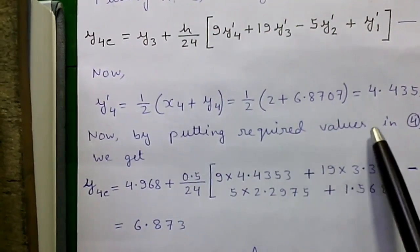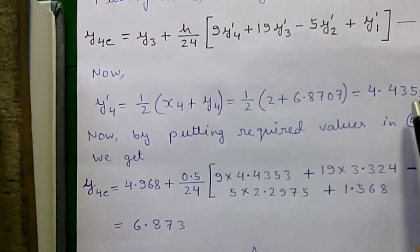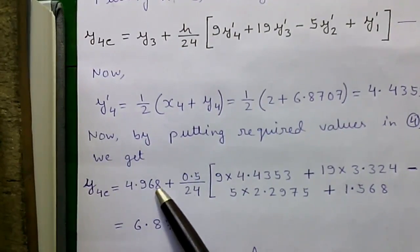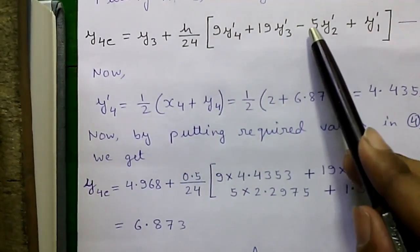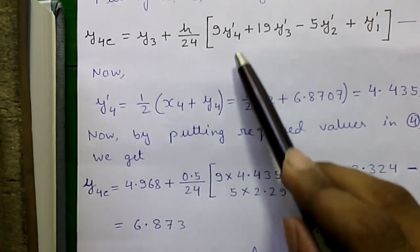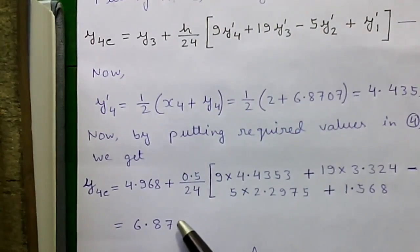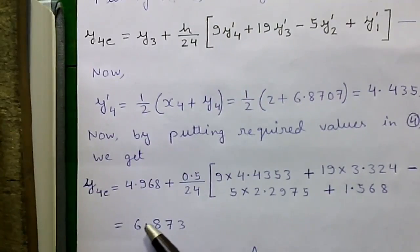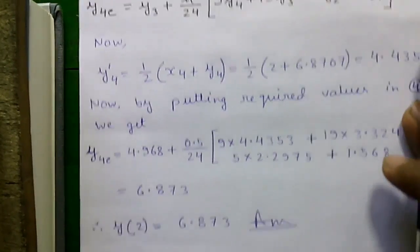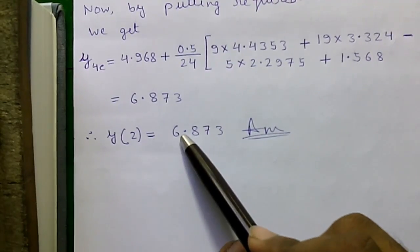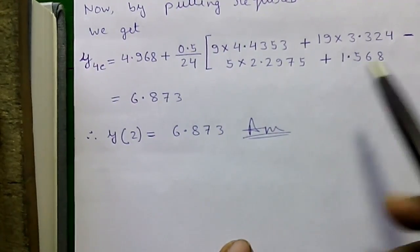Now, by putting the required values in formula number 4, we will get this. Just put the required values in this formula and you will get the value 6.873, which is our required answer. So, y of 2 equals to 6.873.